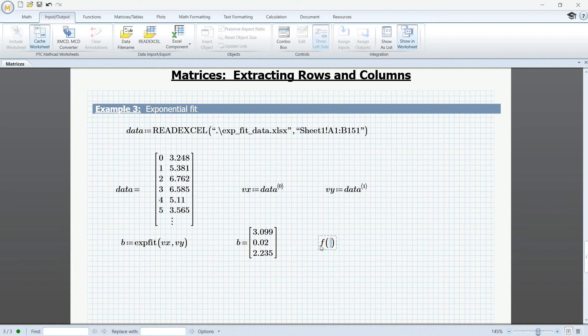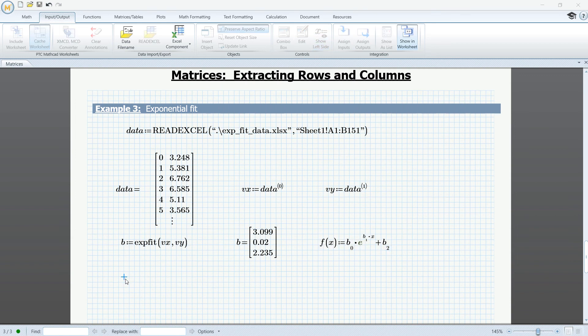So, let's go ahead and type the function as a function of X and we're going to define this as the first element of the B vector. So, B0, B index 0. I'm going to multiply this by the constant E raised to the power of B index 1 multiplied by X and we're going to take all this and we're going to add the third element which would be B2. So, we have the fitting function.